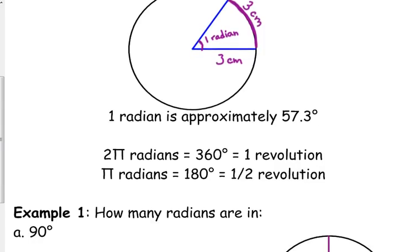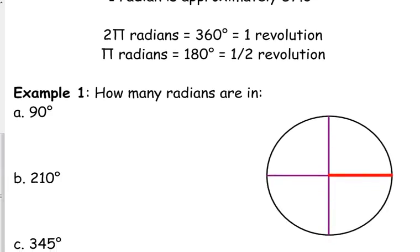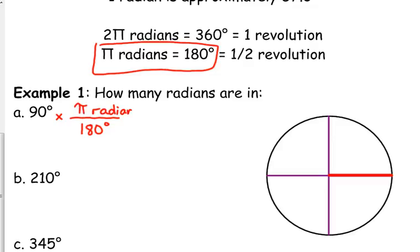Has anybody in here had chemistry or physical science? So do you remember when you had to convert units? When you had to go from one type of unit to another type of unit, you multiplied by a ratio. We're going to do the same thing here. So if I'm asking you how many radians are in 90 degrees, we're going to use a ratio based off of this. Pi radians is 180 degrees. So if I'm trying to go from degrees to radians, I put what I want to get rid of on the bottom.